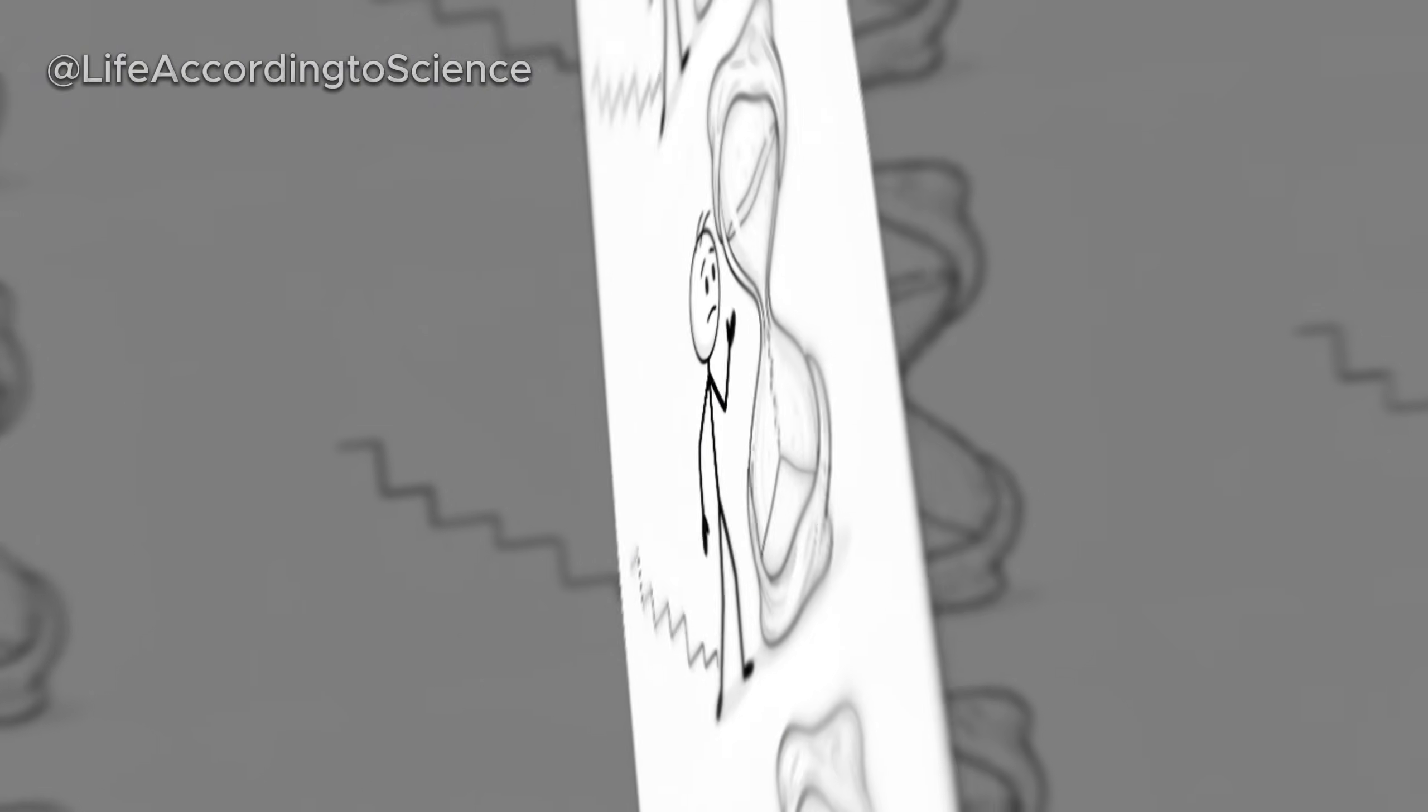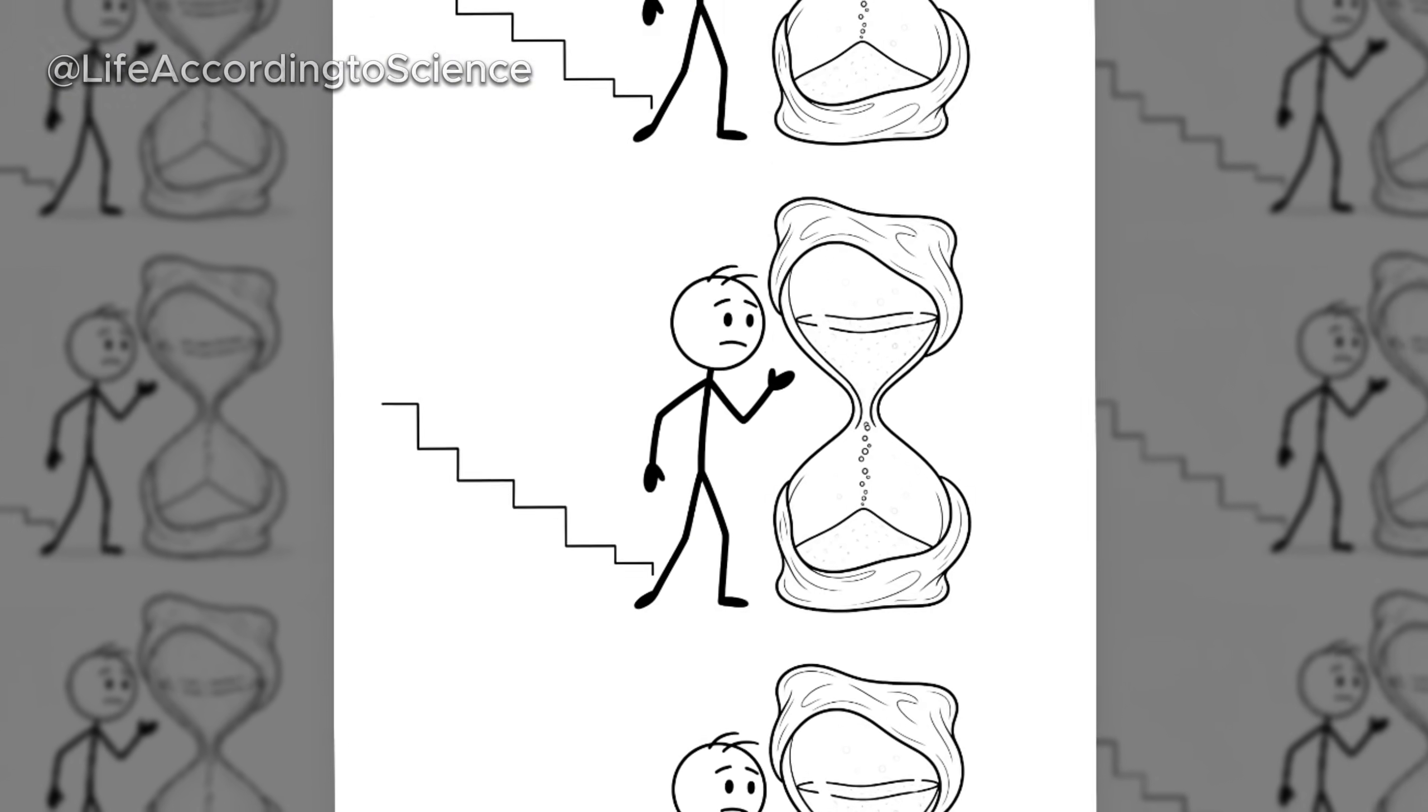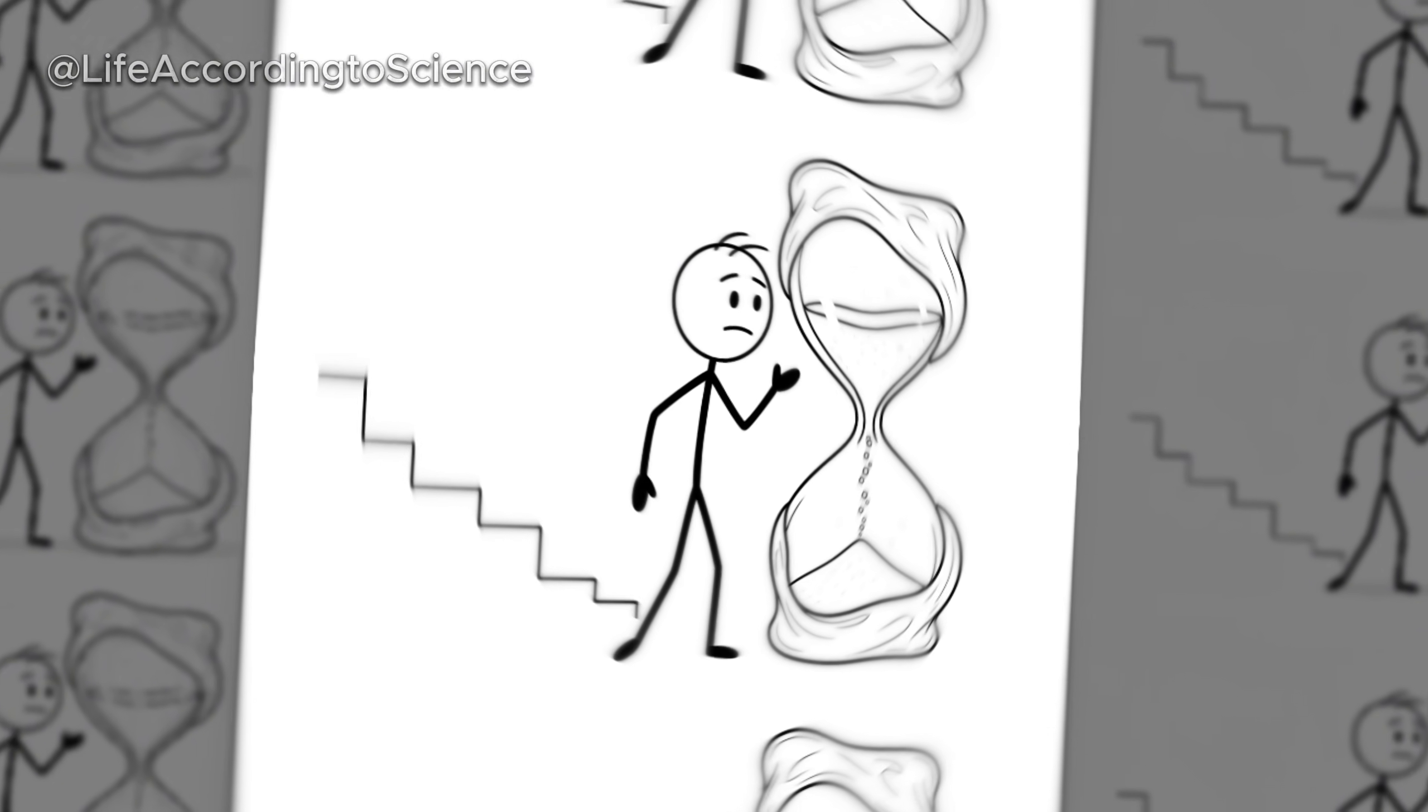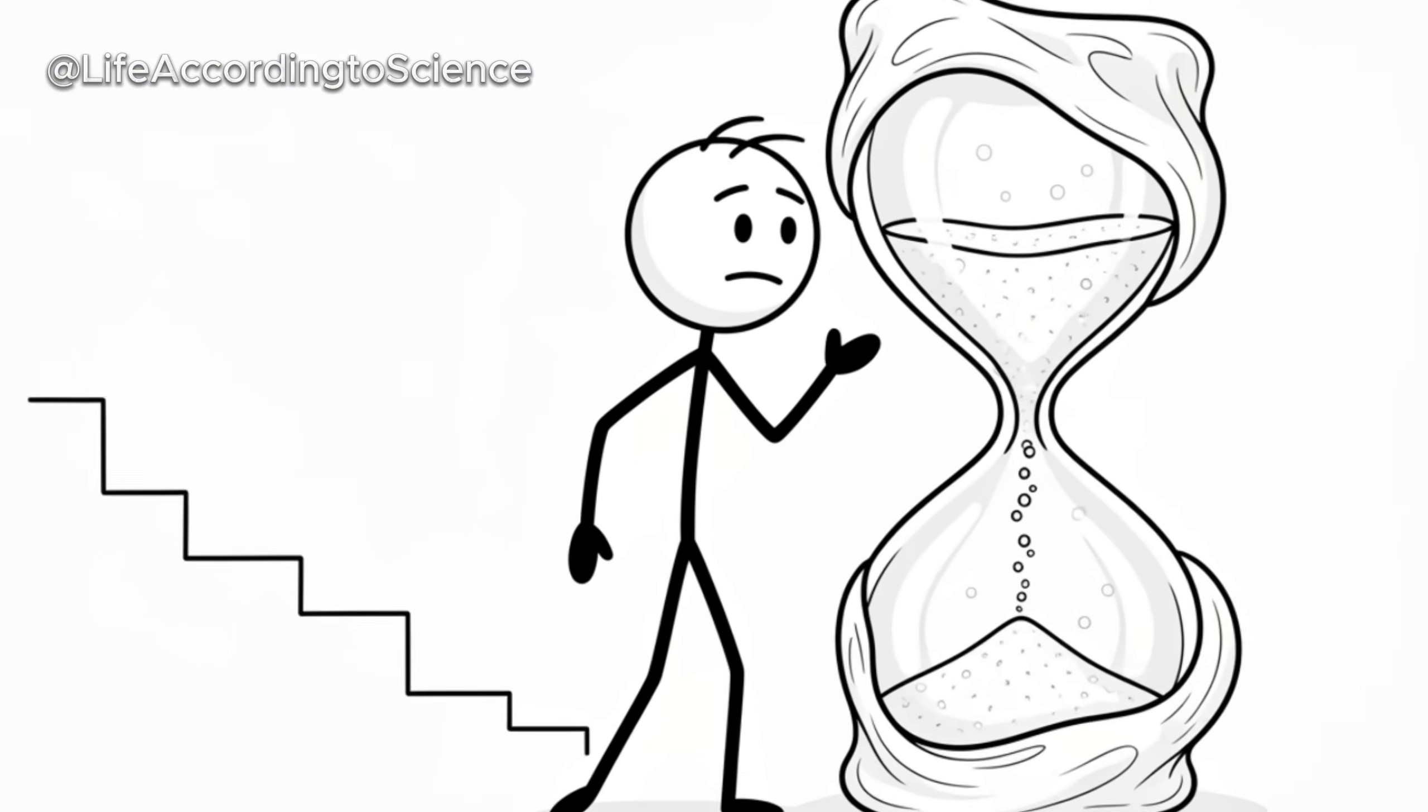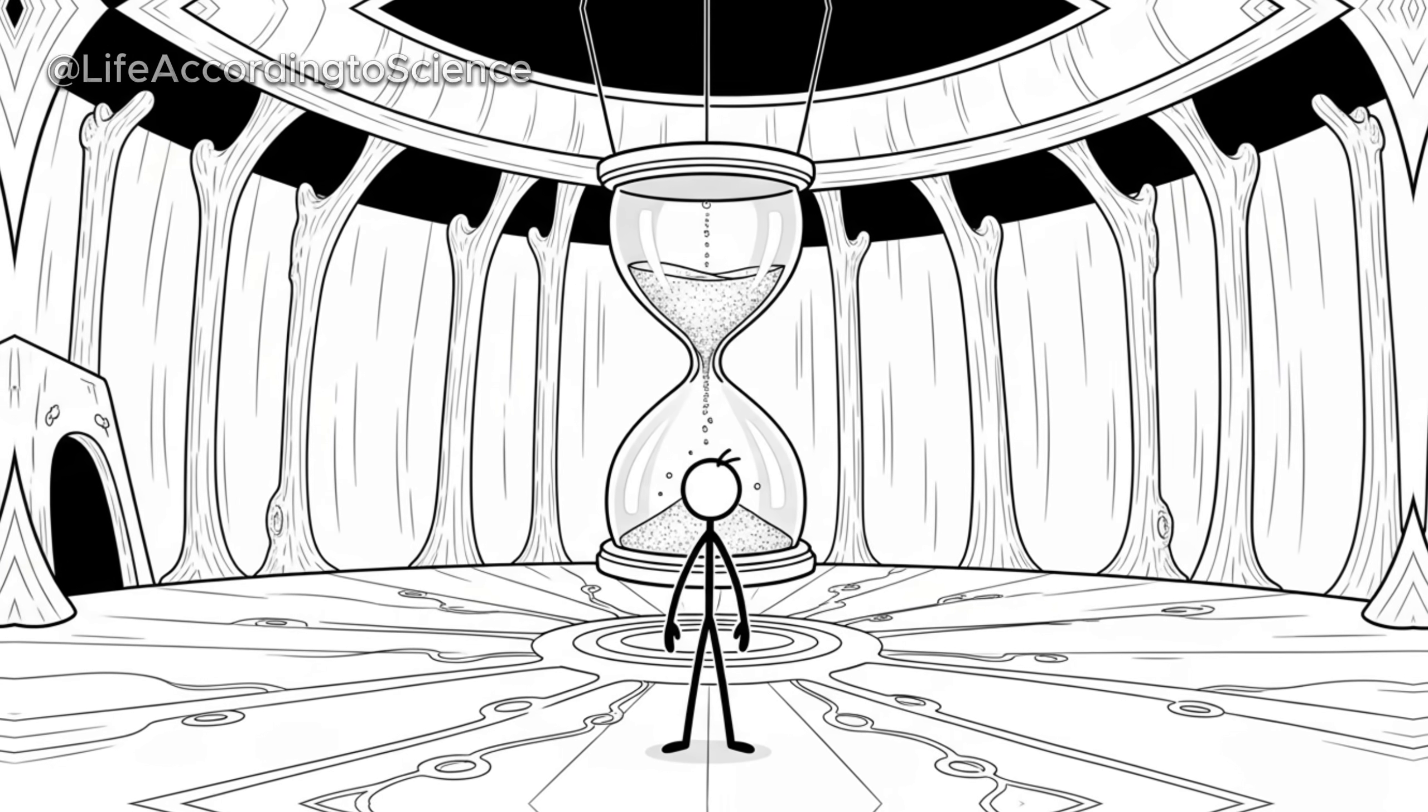Evolutionary biologists believe this happens because our ancestors needed mental sharpness to hunt when food was scarce. The body's fight-or-flight chemicals, like norepinephrine, surge, keeping you energized. However, this stage can't last forever. The body is spending stored energy quickly, and sooner or later, it will have to shift to preservation mode. The countdown to metabolic slowdown has begun.